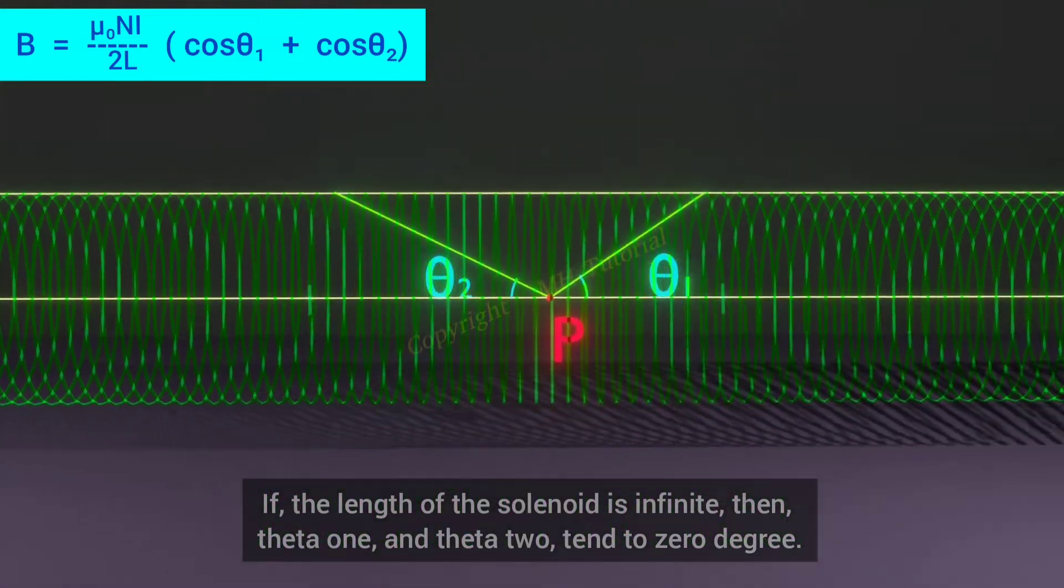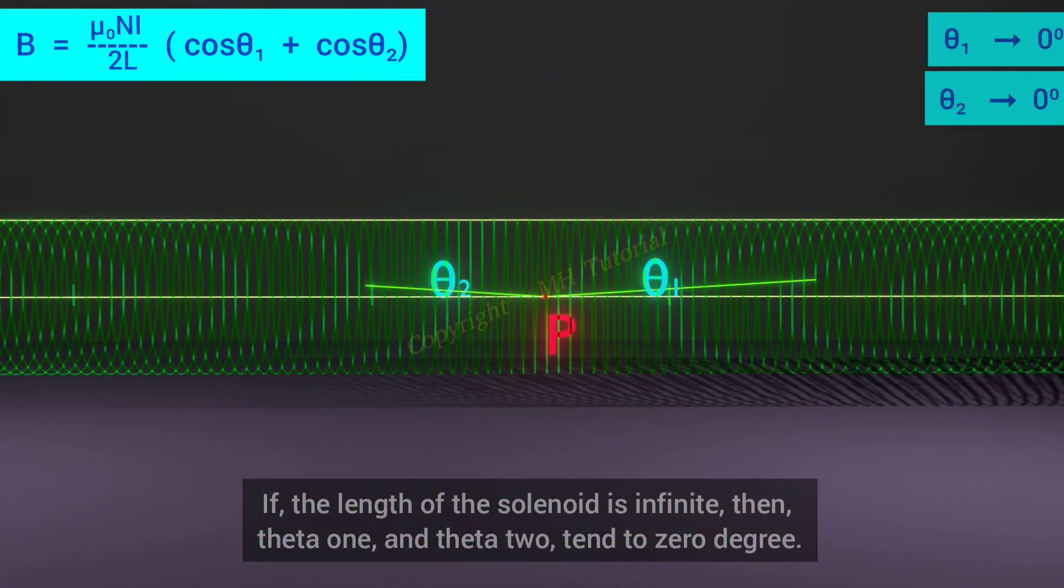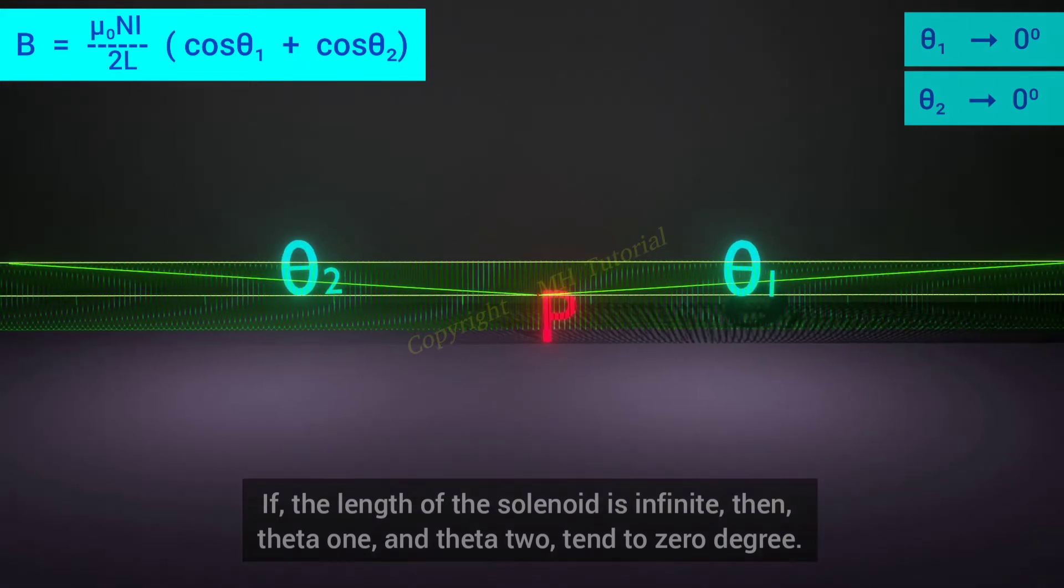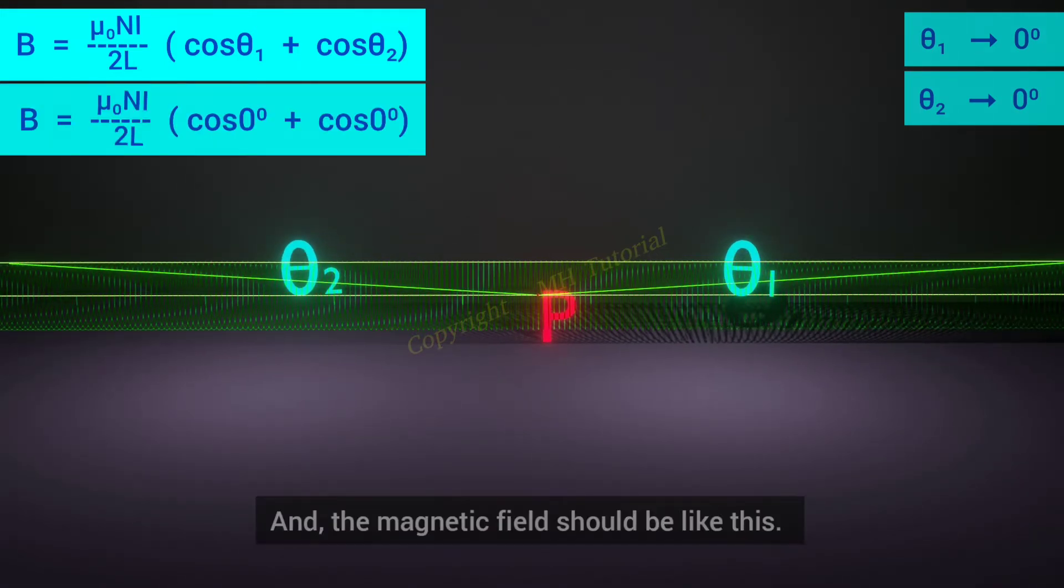If the length of the solenoid is infinite, then theta1 and theta2 tend to 0 degree, and the magnetic field should be like this.